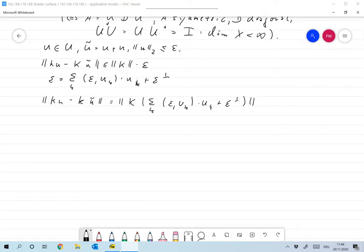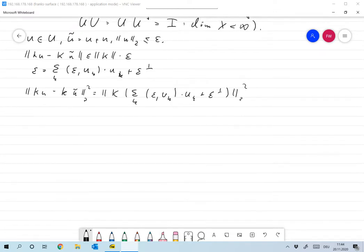Now let's look at again at norm ku minus ku tilde, which is of course nothing but the norm of K times epsilon. And I already insert the representation: scalar product of epsilon with uk times uk plus some epsilon perp. Okay, and maybe we take the square. Now let's look at that.